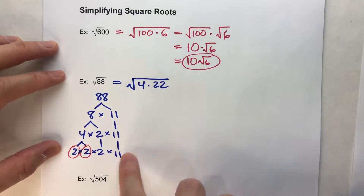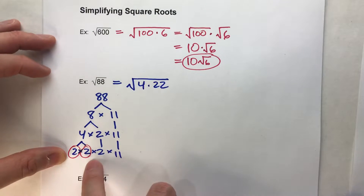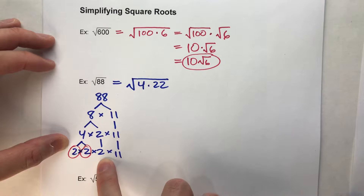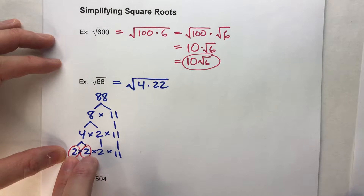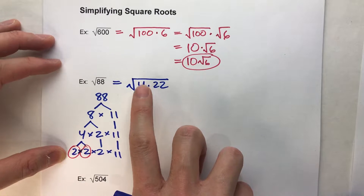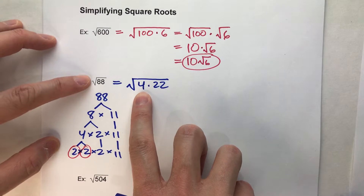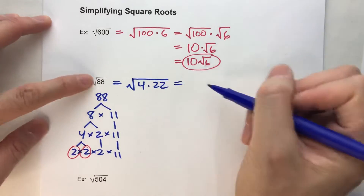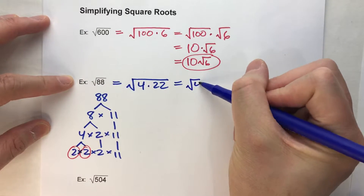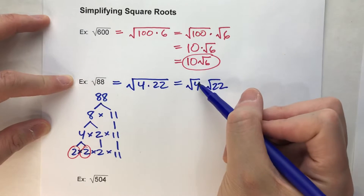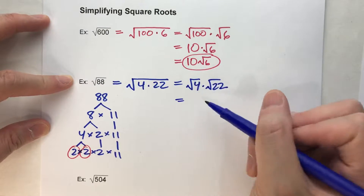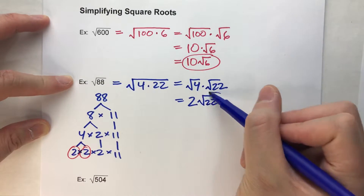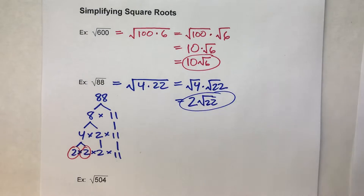In other words, we break it down into prime factors, find the pairs of prime factors — in this case, 2 and 2. Notice there is a third 2, but we don't want a trio, we want a pair. So we just take the two of them and multiply them together. That's the biggest perfect square that goes into 88. Multiply the leftovers together — that's the other number. Now we can break down this square root: it's the square root of 4 times the square root of 22. The square root of 4 is 2, and the square root of 22 stays on the end. That is our simplified square root.